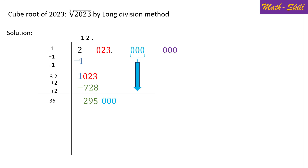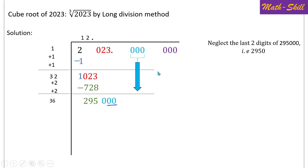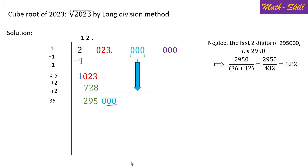To select the next digit, neglect the last two digits of 295000, giving 2950. Divide 2950 by 36 × 12 = 432: 2950 ÷ 432 ≈ 6.82. So the next digit in the quotient should be tried as 6. Let's verify whether this assumption is correct.